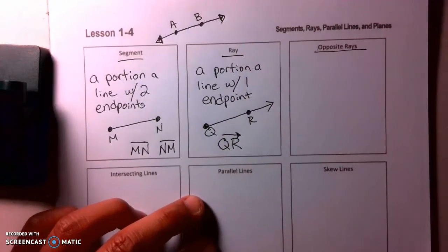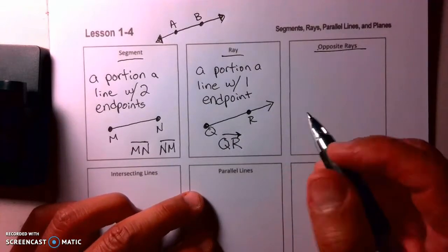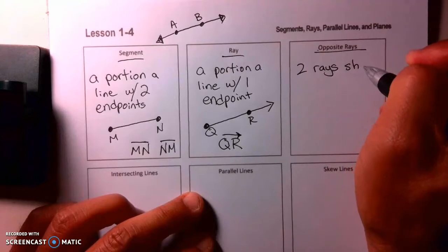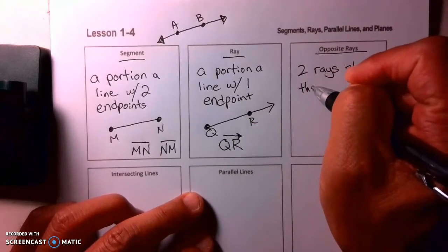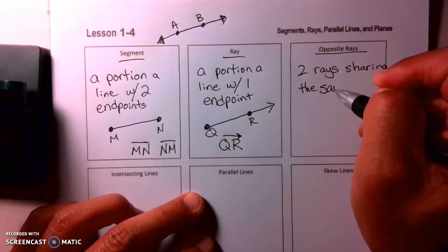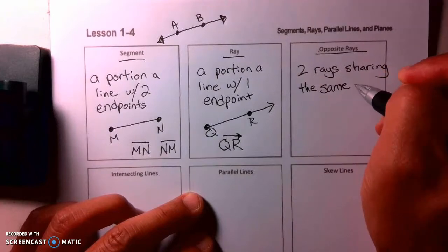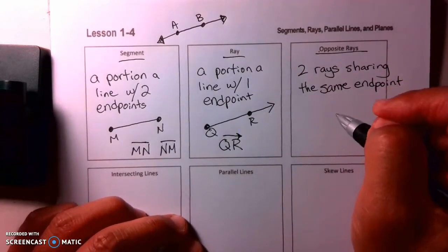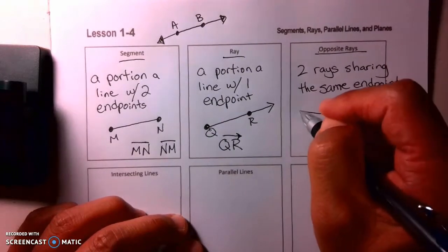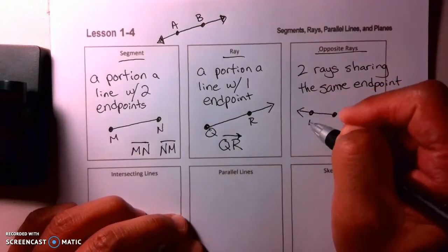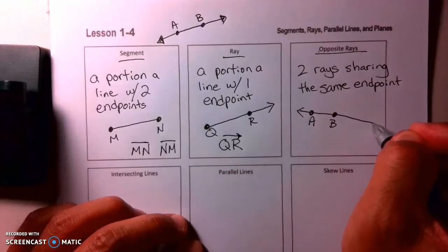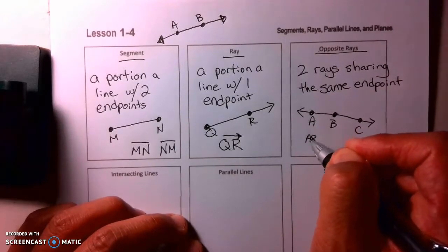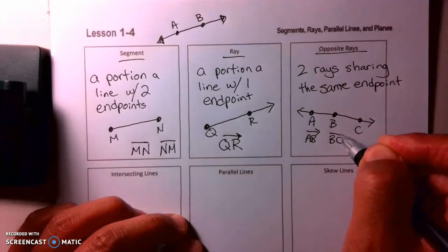Opposite rays is one of the silliest definitions out there. It's basically two rays sharing the same endpoint. And really this is a dumb definition here, because we won't see it except for maybe this assignment here today. But you've got one ray, let's call this ray AB, and the other ray is BC. You've got ray AB, you've got ray BC. These are opposite rays, and really they just form one continuous line.